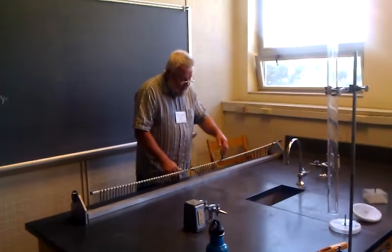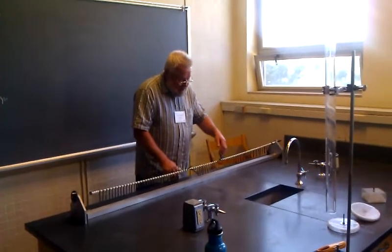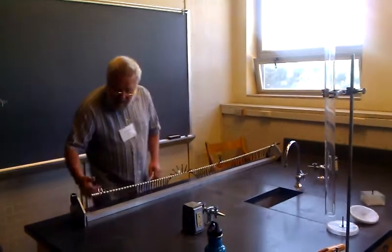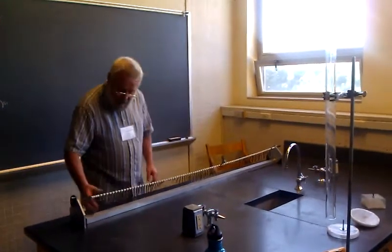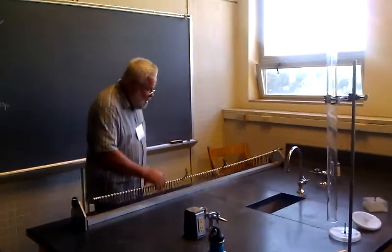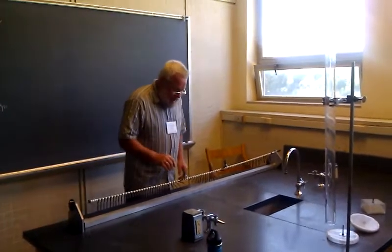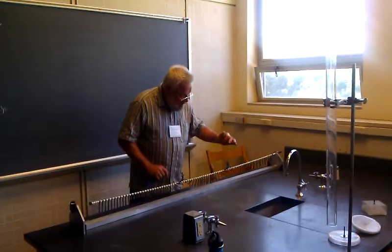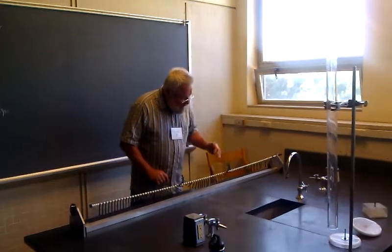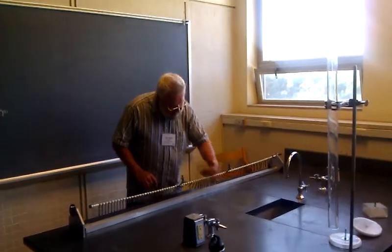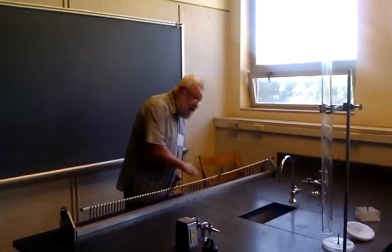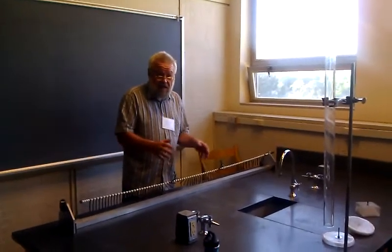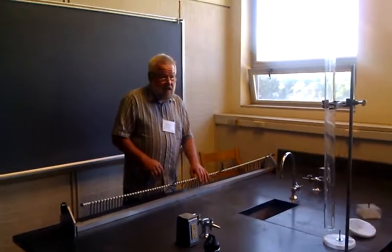This is also a model for gravity. If I make two solitons like this and put one a little bit further away, it has a tendency to come back, because it has a tail in this direction and this one has a tail in this direction. When the solitons come closer, they can save energy. It's a model for gravity.